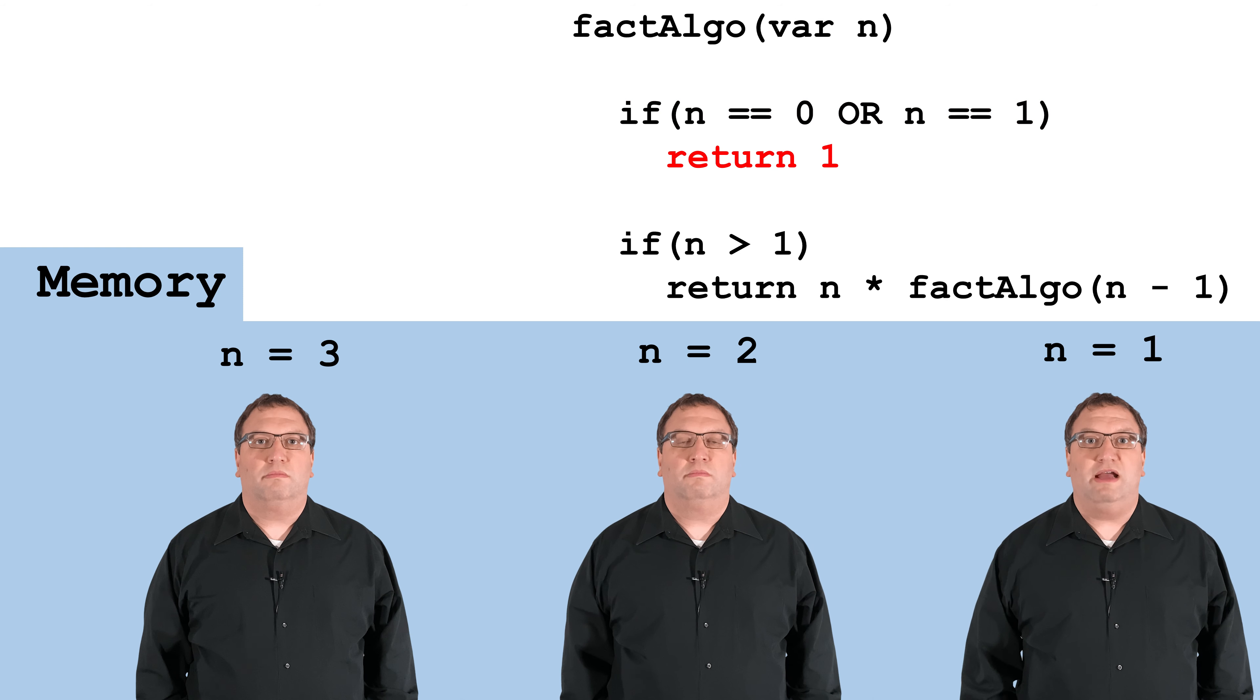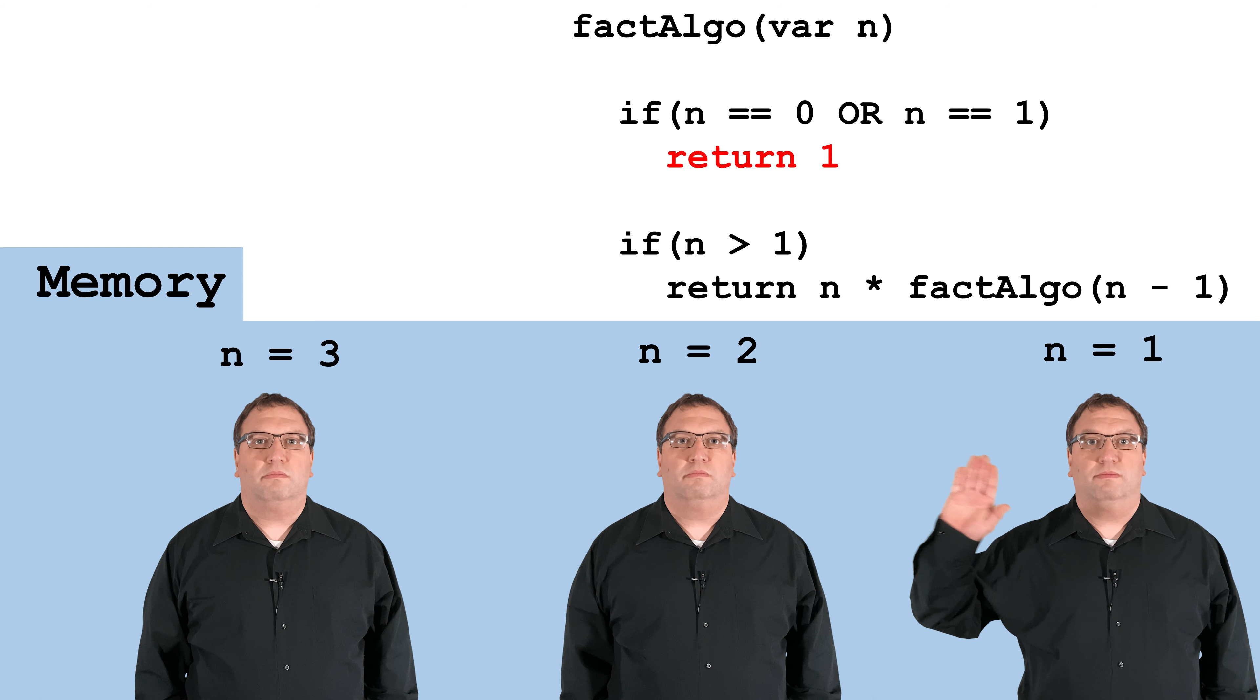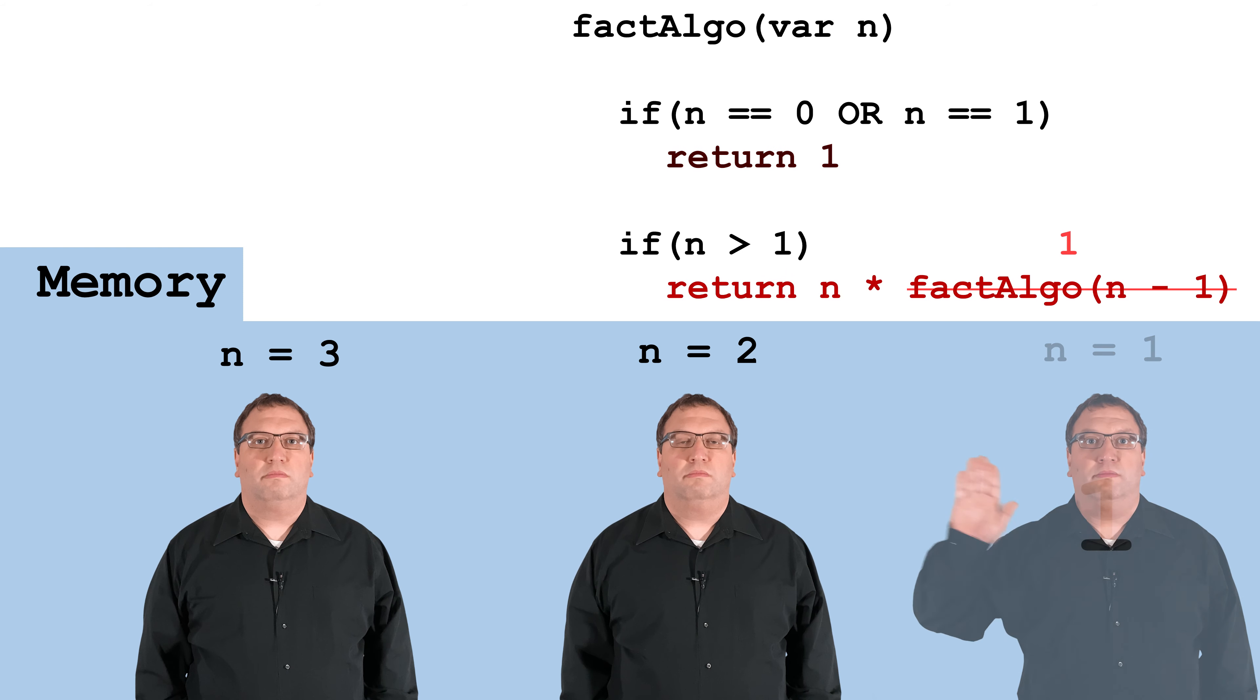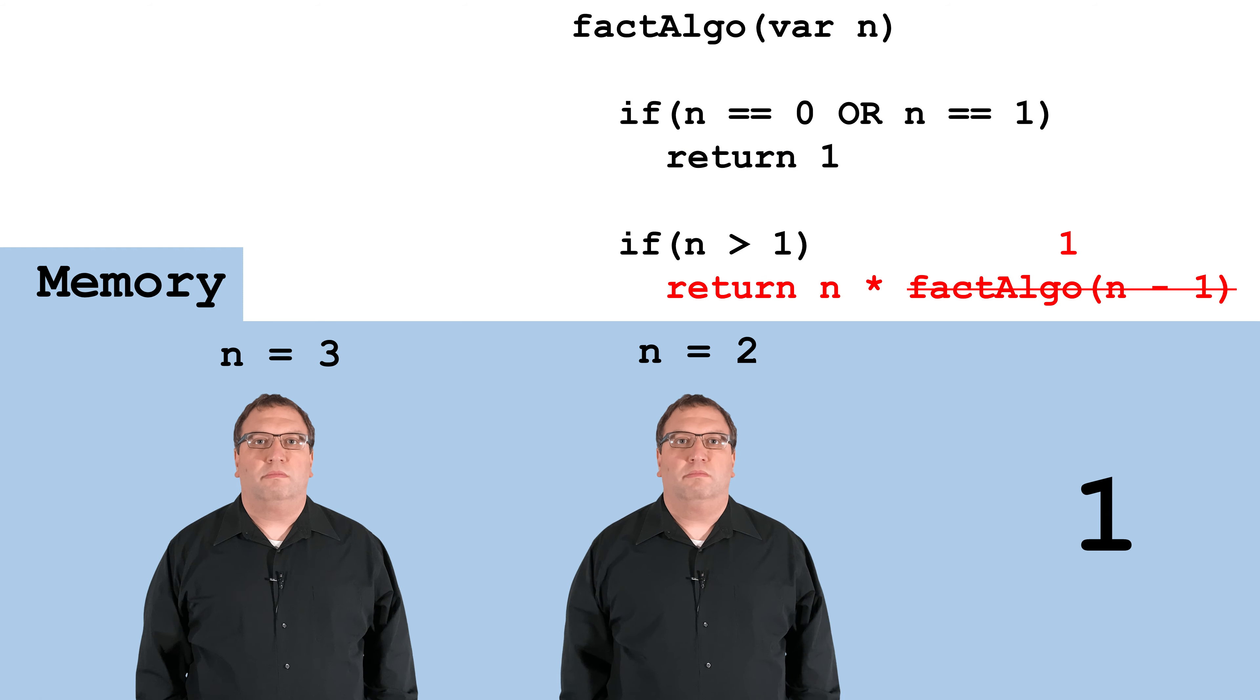Let's see what they gave me for n. n is 1. Well, 1 isn't equal to 0, but it is equal to 1, so I'm going to execute the indented line of code. I've reached the base case, so I'll just return 1.